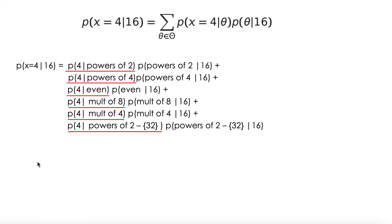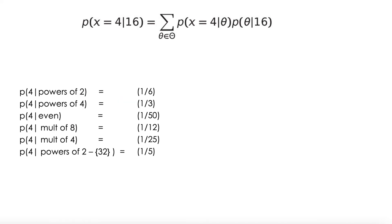The question can be decomposed over all possible models. Here are the results: the probability of 4 given powers of 2 is 1 out of 6 because we have 6 possible powers of 2 within our domain. Powers of 4: we only have 3 possible powers of 4, so the probability is 1 third. We have 50 even numbers, 12 multiples of 8, 25 multiples of 4, and only 5 powers of 2 except 32 — so these are the respective probabilities.